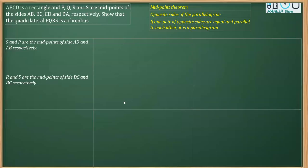We are going to do a question based on the midpoint theorem, taken from the chapter on quadrilaterals. In this question, ABCD is a rectangle and PQRS are their midpoints.